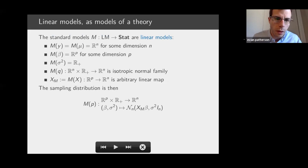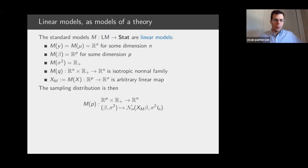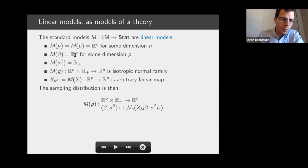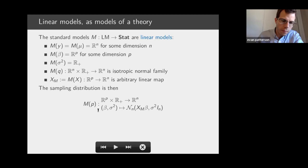To get back the regular linear models, we assign y and mu to be R^n for some n, beta becomes R^p for some dimension p, sigma-squared is assigned to be the non-negative reals, the random component is the isotropic normal family, and the generator X is an arbitrary linear map, since we impose no restrictions beyond what's in the axioms. By functoriality, the sampling distribution then has the standard form of a linear model.